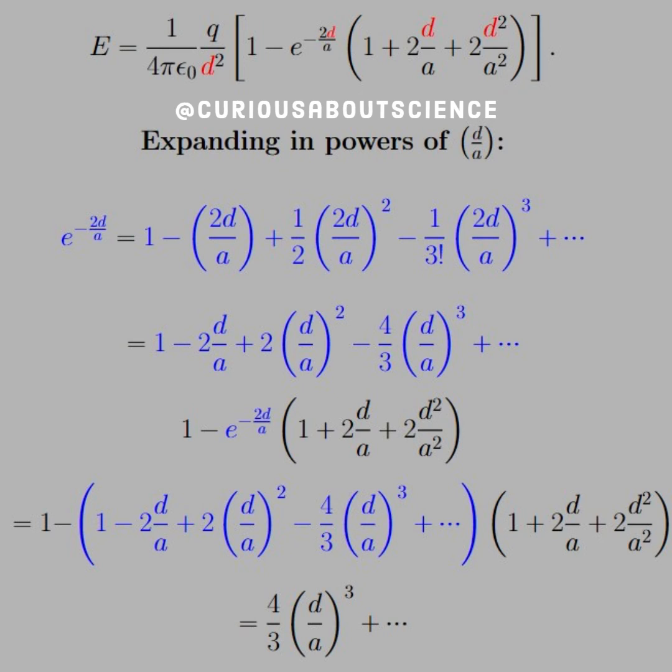we see that we find ourselves a leading term, 4 over 3 times d over a cubed, due to the fact that everything else before canceled out. This will be the term we use to simplify down the electric field.